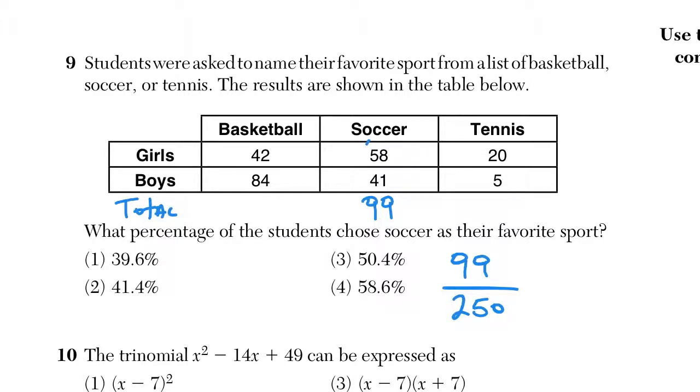So our ratio is 99 out of 250 students. Now the question becomes what is that as a percent? I would recommend just simply typing this in as a division problem. Your calculator is going to say 0.396. We can convert that to a percent by multiplying it by 100 or simply moving the decimal over twice and arriving at our answer of 39.6%.